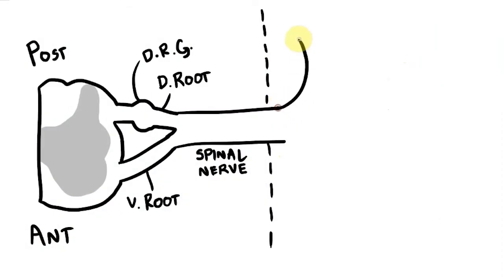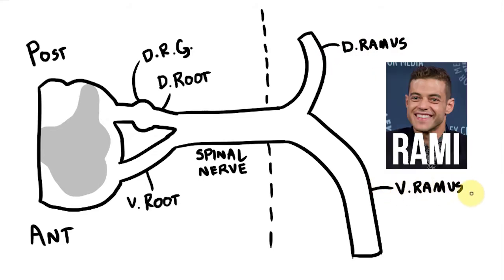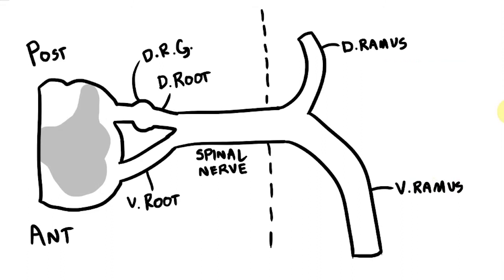We have a small posterior branch that supplies the skin and muscles at the back and then a large anterior branch that supplies everything else. The latin word for branch is ramus so we'll call this structure at the back our dorsal ramus and the larger branch at the front will be the ventral ramus. If you want to talk about both of them we call them the rami. And that's it we've drawn our spinal nerve.